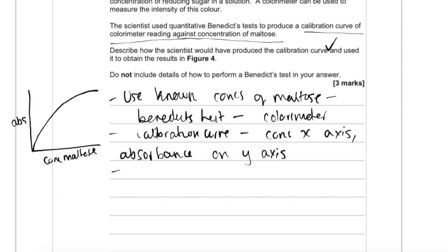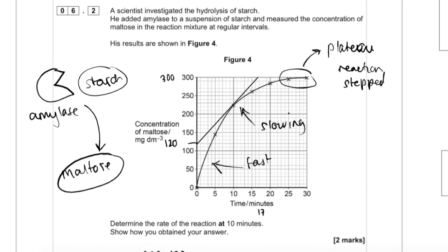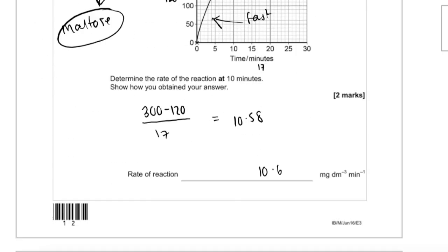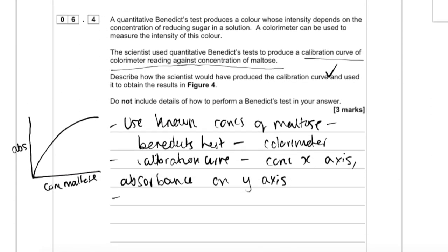Let's say it looks something like this. And now what we do to obtain the results in figure 4 - let's take the example of 5 minutes, we've performed the Benedict's test on it. So we've got an absorbance value, right, but we don't know the concentration. So actually, all we're going to do is kind of read it off this graph. So say we've measured the absorbance to be here, you can almost read it backwards and find out the concentration from the graph.